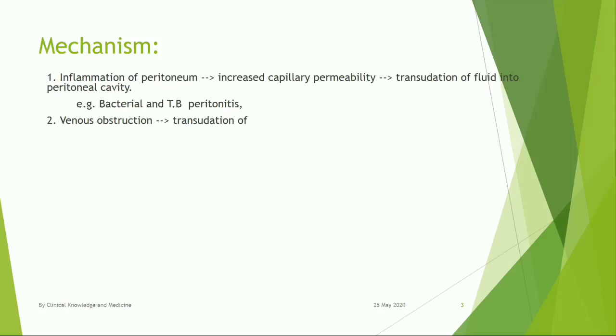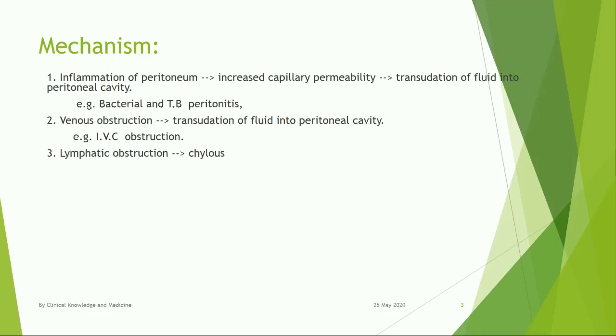Venous obstruction causes transudation of fluid into the peritoneal cavity. Example: inferior vena cava obstruction. Lymphatic obstruction leads to chylous ascites.